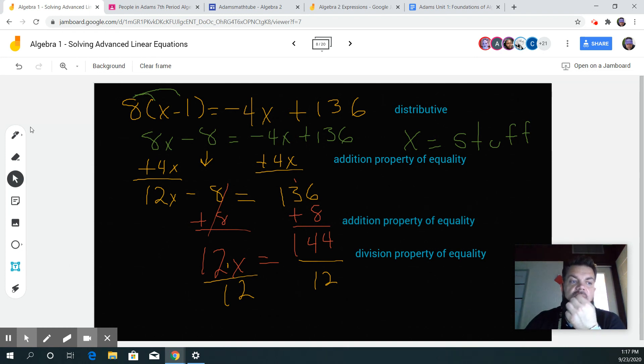12 divided by 12 is 1. 1 times x is just x. In other words, this divided by this gives me 1 over 1. 1 times x is x. What's 144 divided by 12? 12. And that is our solution. Any questions?